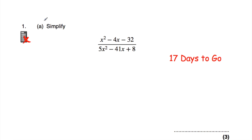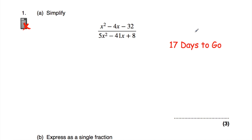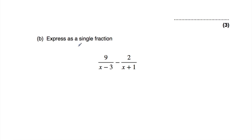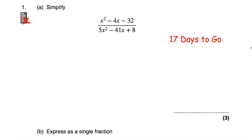Question number one: part 1a, simplify x squared minus 4x minus 32 over 5x squared minus 41x plus 8. This is an algebraic fractions simplification question. My hint is to factorize the numerator and factorize the denominator, then see if there's anything you can cancel out. For part b, we're doing algebraic fractions subtraction: 9 over (x minus 3) subtract 2 over (x plus 1). Remember you want to get a common denominator — multiply both the numerator and denominator of each fraction by the other fraction's denominator, get equivalent fractions, then simplify. If you need to recap, we covered algebraic fractions 17 days ago.